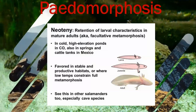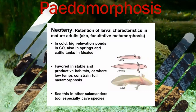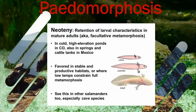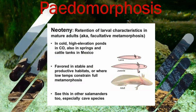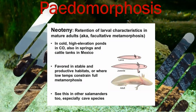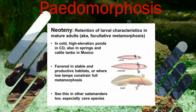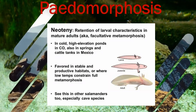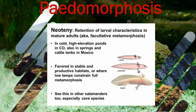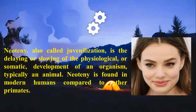Neoteny means the retention of child-like features at the adult or later stage. These external gills, for example, are features that amphibians retain even at their adult stage.